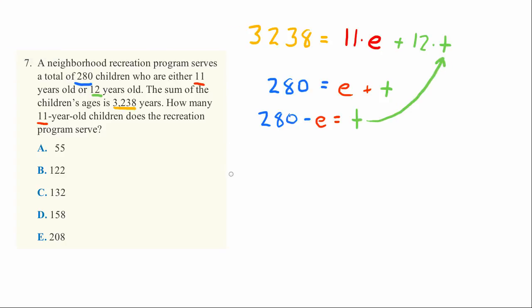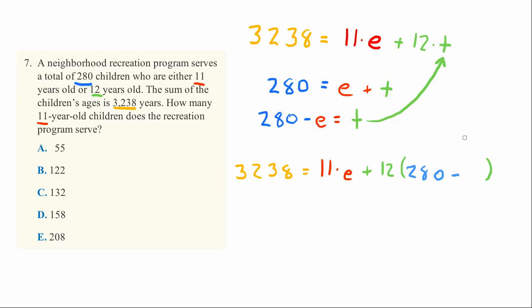So 3,238 equals 11E plus 12 times the quantity T equals, which is 280 minus E. So that's 11E plus 12 times (280 minus E). Now we have just E in the equation, so we can solve for it.